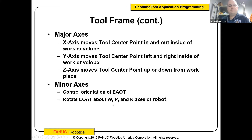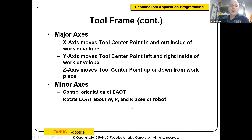There is a little bit of an error here: if your TCP is not at the center of rotation of your joint — which it's not going to be — as you rotate those minor axes, it's not going to center that rotation around that TCP. Unless you have it set on tool frame as your jog method, then it will. Your yaw, pitch, and roll will center around whatever tool you have selected.